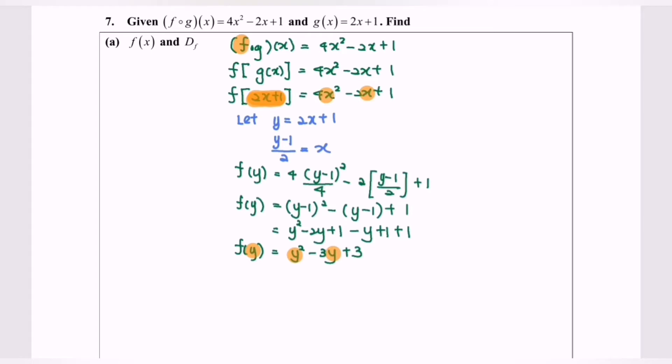Finally, we have f(x) = x² - 3x + 3, which is a quadratic equation. So the domain for this quadratic would be negative infinity to infinity.